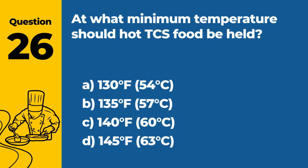Question 50: How should a restaurant handle a food recall notification for a product in its inventory? A. Continue using the product until a substitute is found. B. Sell the product at a discount to quickly deplete stock. C. Remove the product from inventory and follow the recall instructions. D. Donate the product to minimize losses. Answer: C. Remove the product from inventory and follow the recall instructions. Upon receiving a food recall notification, a restaurant should immediately remove the affected product from its inventory and follow the specific recall instructions to ensure safety.